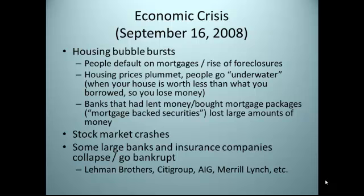As a result of foreclosures, housing prices started to plummet. When housing values go down, people become what is known as underwater — when the house is worth less than what you borrowed to pay for it, so you lose money. For example, a home that is worth $100,000 when you buy it, if it becomes worth less than that, you have lost money on your loan because you are paying back more than you could sell your house for. The banks that had lent this money and bought up a bunch of these mortgages — known as mortgage-backed securities — lost large amounts of money. They had gambled that people would be willing to pay back loans, and those gambles did not work out.